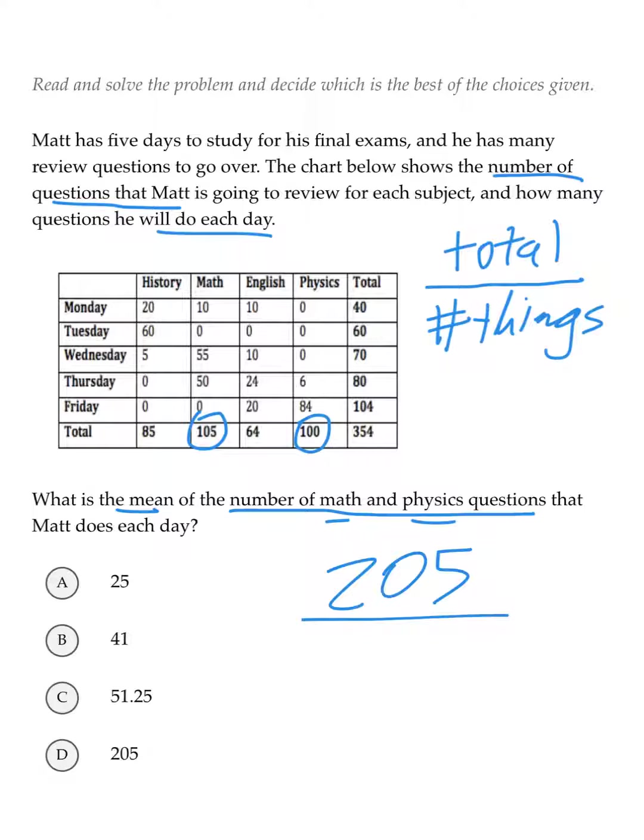Now our number of things, in this case, happens to be each day that Matt does questions. We can see from the chart that we have one, two, three, four, five total days.